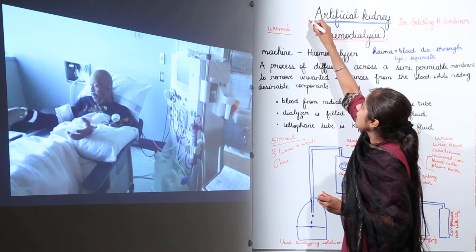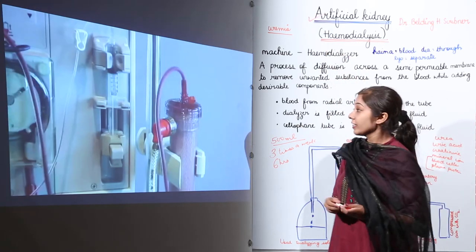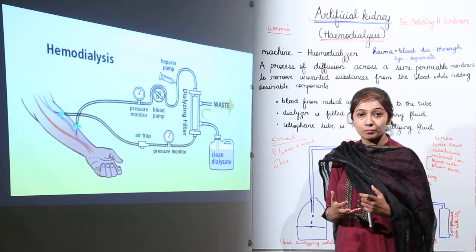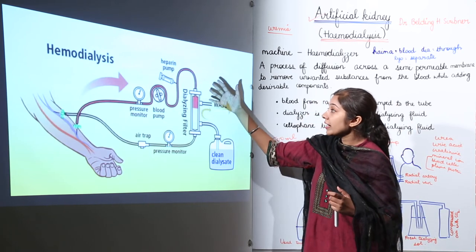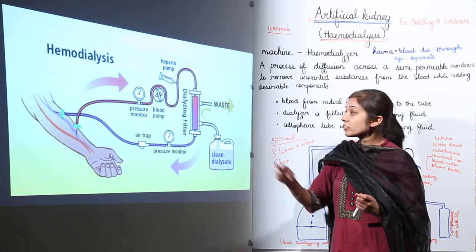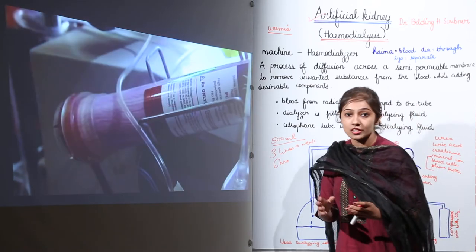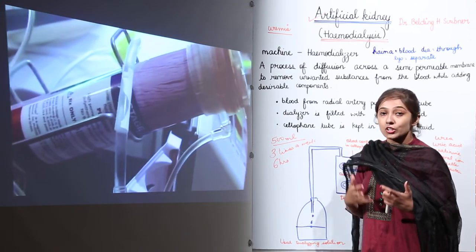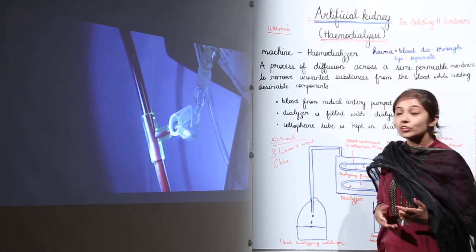Now we can see how this artificial kidney works — how the tube is attached to the radial artery of the patient, how the blood containing toxins is filtered, and how the filtered, purified blood is returned back to the patient. This is how a hemodialyzer — the artificial kidney — is used in hospitals.